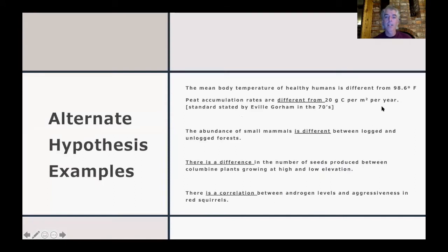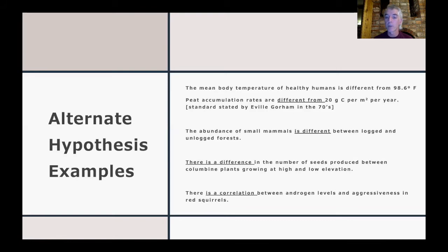Just like the null hypotheses we had before, each would have a corresponding alternate hypothesis. The alternate hypotheses then might be that the mean body temperature of healthy humans is different from 98.6 degrees Fahrenheit, or that peat accumulation rates are different from 20 grams of carbon per meter squared per year, or that the abundance of small mammals is different between logged and unlogged forests, that there is a difference in seeds produced between columbine plants at high and low elevations, or that there is in fact a correlation between androgen levels and aggressiveness in red squirrels. So whereas null hypotheses state the absence of a relationship, absence of a difference, or values equal to some expected standard, alternate hypotheses are typically about differences or relationships.